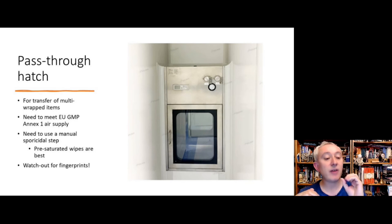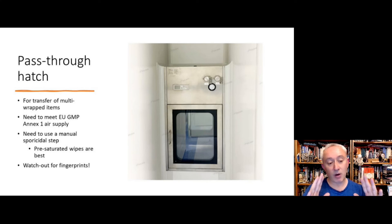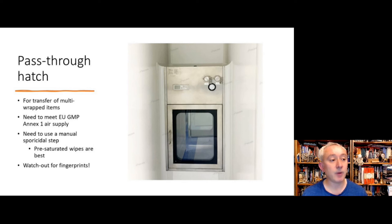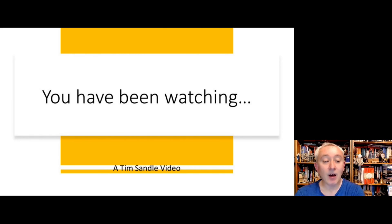In summary: if we can autoclave something, that's the optimal way to get it into an aseptic area. If not, we should use an automated decontamination chamber. If that's not possible, we use a pass-through hatch with Grade A HEPA-filtered air supply and reliance on manual disinfection methods. We should always try to follow that order.